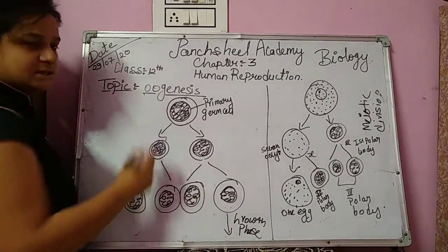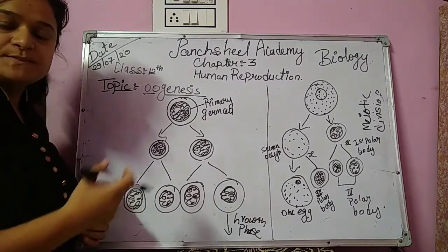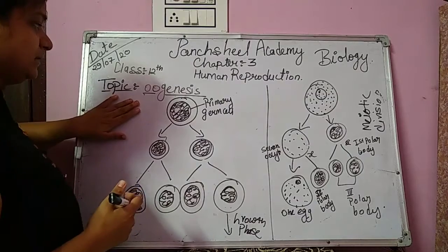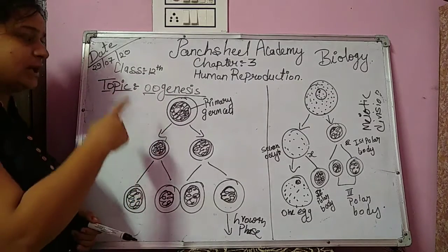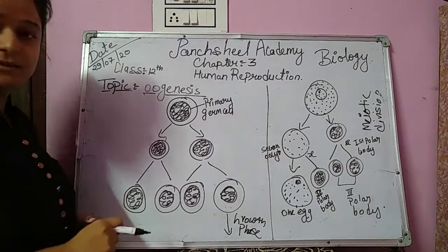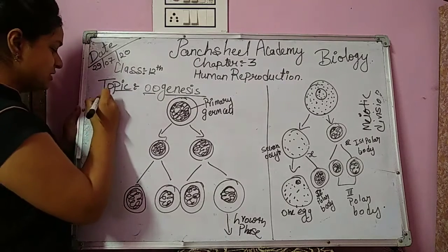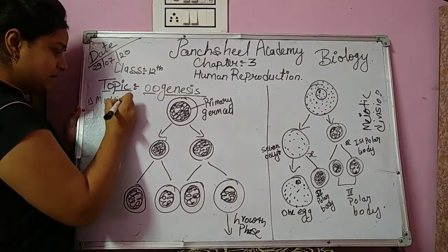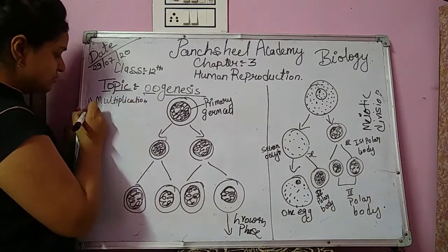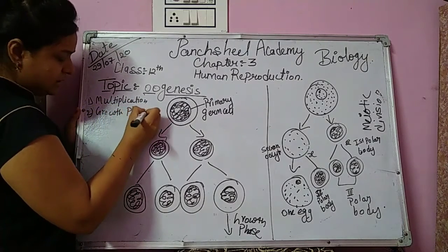Now we are talking about oogenesis. Oogenesis means the formation of ovum. Just like spermatogenesis, oogenesis also occurs in three phases: multiplication phase, growth phase, and maturation phase.